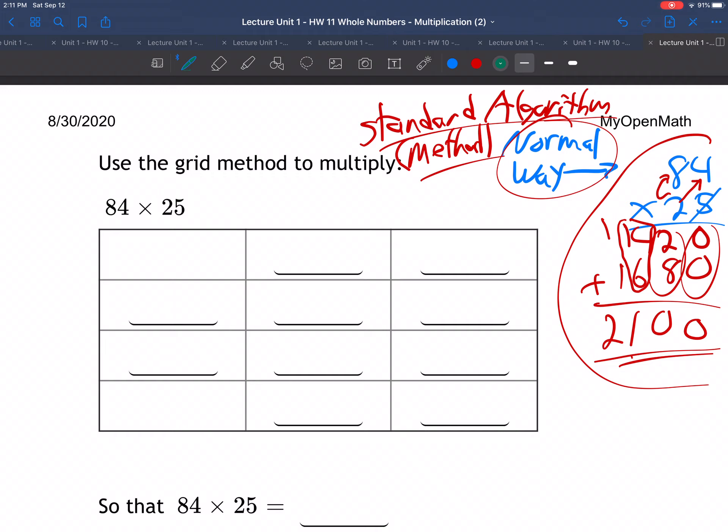Okay, so this is called the grid method. What do you do? You bring the 84 over here, and you write 80 and 4. You write the actual 80 instead of 8, 4. You write 80 and 4, because you know that's what 84 really is, an 80 and a 4. And then the 25 you bring down here, 20 and 5.